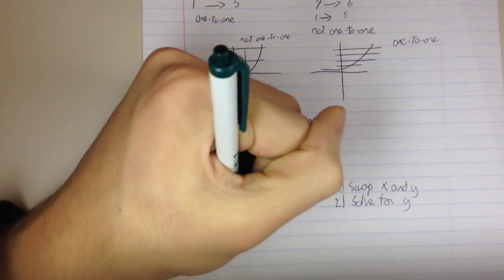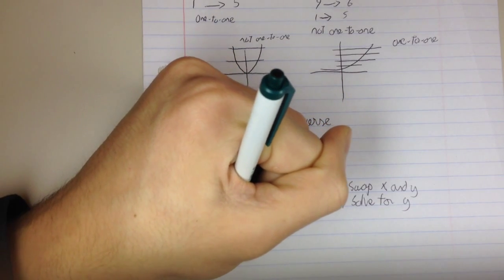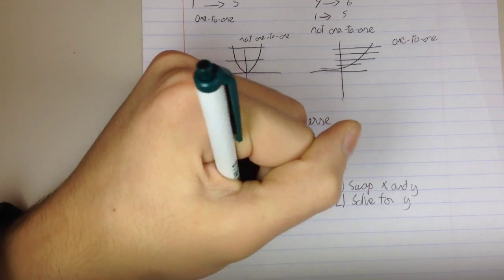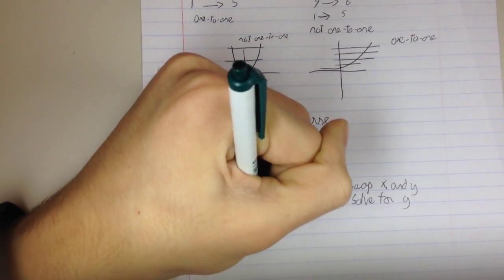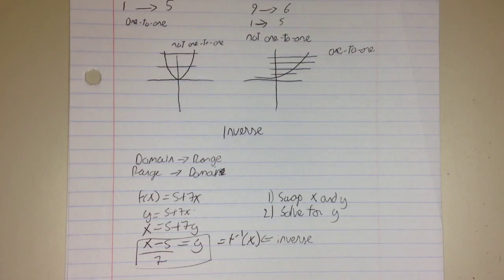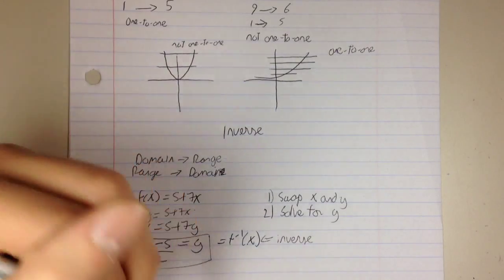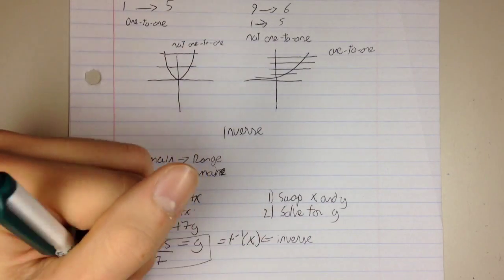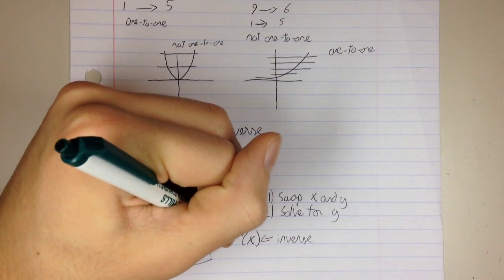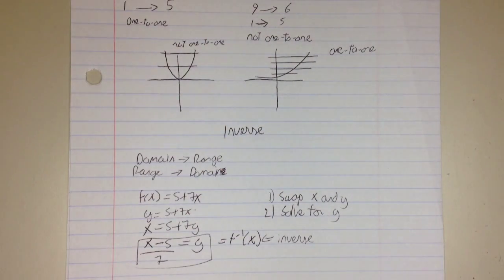The next step is to just solve for y. In this case it's pretty easy: starting from x = 5 + 7y and solving for y, you get (x − 5) / 7 = y. This function is the inverse of our original function, and you'll sometimes see it written as f⁻¹(x), which just means the inverse of the original function.